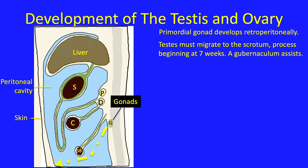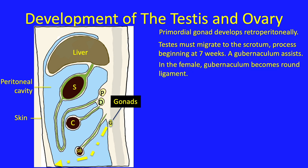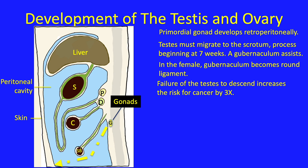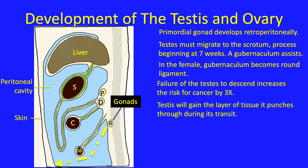The ovary also migrates, but only to the pelvic cavity, where it becomes intraperitoneal. The gubernaculum in the female ultimately becomes the round ligament of the uterus. Failure of the testis to descend is associated with developing testicular cancer. During its transit to the scrotum, the testis gains the layers of tissue it pushes through — mostly the layers of the anterior abdominal wall, not the peritoneum membrane itself. The testis slides behind the peritoneum until reaching the anterior abdominal wall. This topic is discussed in embryology, not gross anatomy.